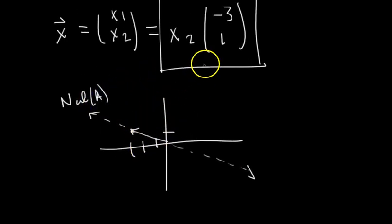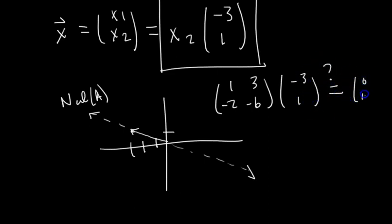So we can pick any vector. So let's try it. So let's pick the vector that, this vector right here. So say x2 equals 1. So we have 1, 3, negative 2, negative 6. That's our A matrix. We multiply it by negative 3, 1, and we should get the 0 vector. So let's check. Does this equal the 0 vector?